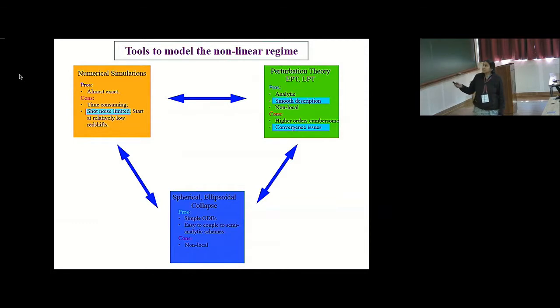The other class is perturbation theories, either in the Eulerian frame (EPT) or in the Lagrangian frame (LPT). The advantages are that they have a smooth description of the density and velocity fields, but their higher orders are cumbersome and they also suffer from convergence issues.